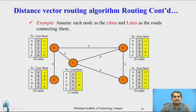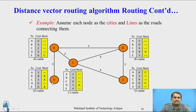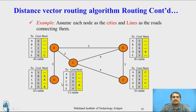For node D: D to A is 3. D to B, via A, cost is 8 — 5 plus 3. D to C, via A, cost is 5 — 3 plus 2. D to D is 0. D to E, via A, cost is 9. Using this approach, we create the routing table and find the distance between each node.